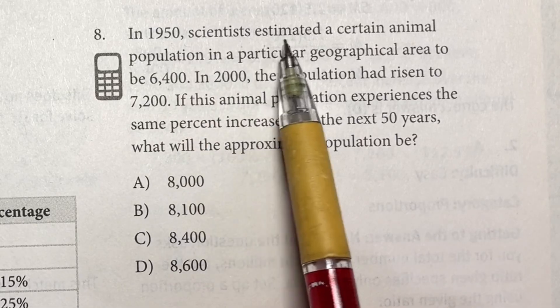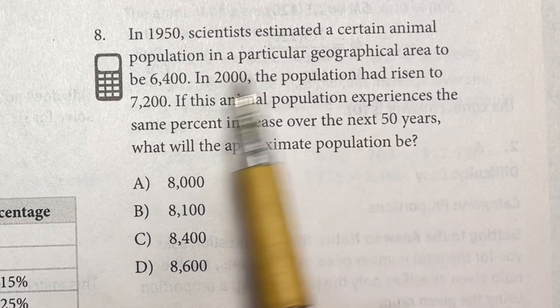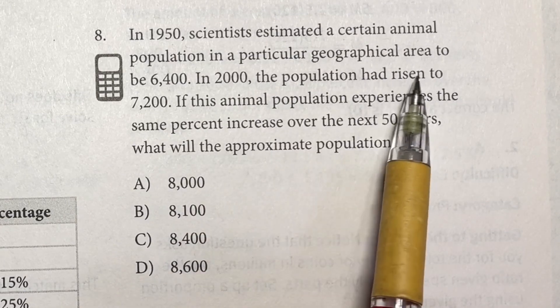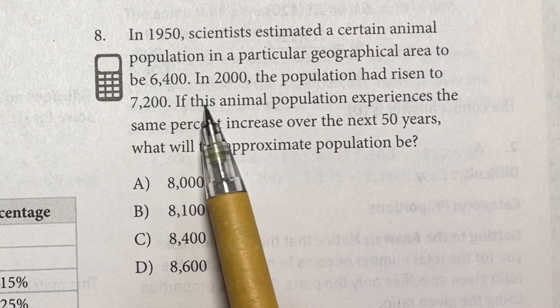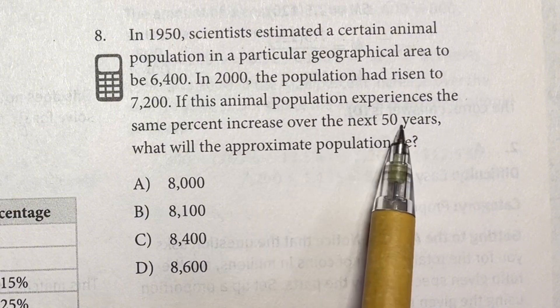In 1950, scientists estimated a certain animal population in a particular geographical area to be 6,400. In 2000, the population had risen to 7,200. If this animal population experiences the same percent increase over the next 50 years,